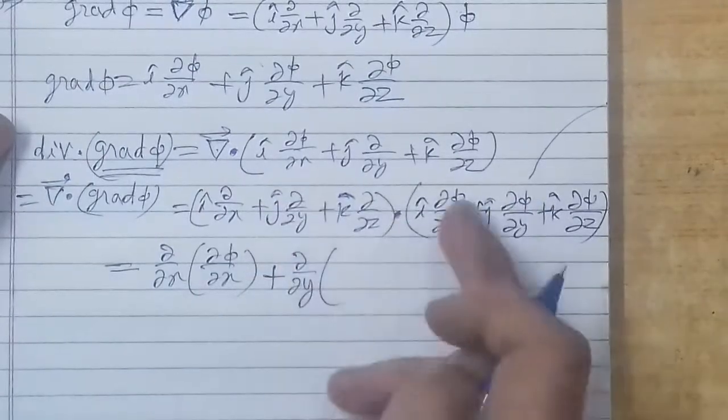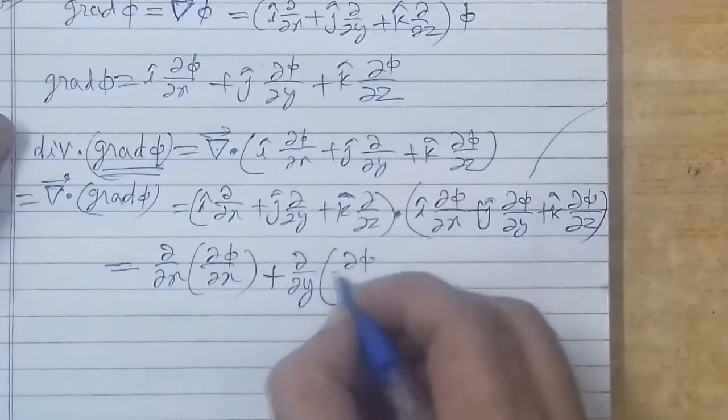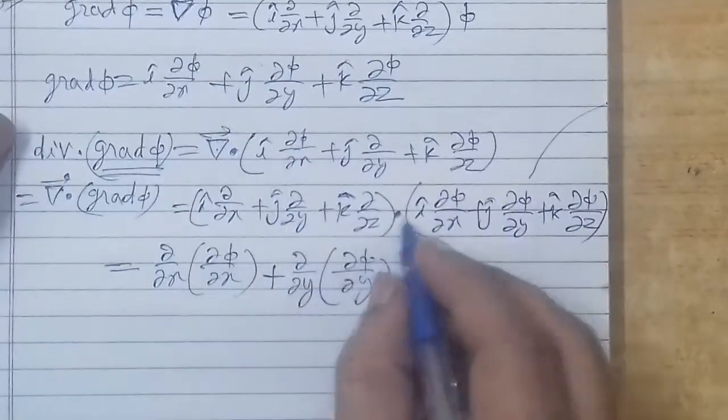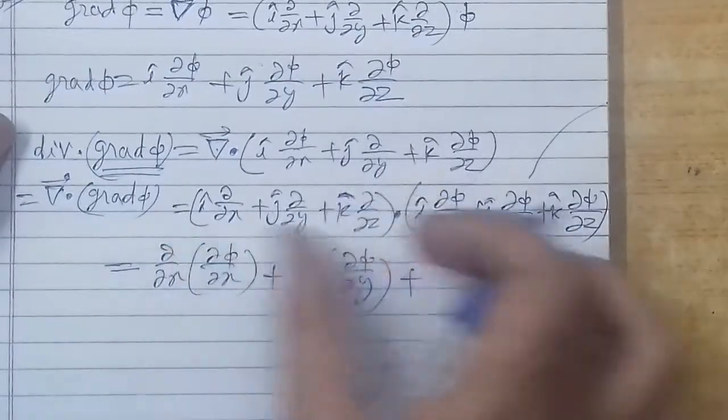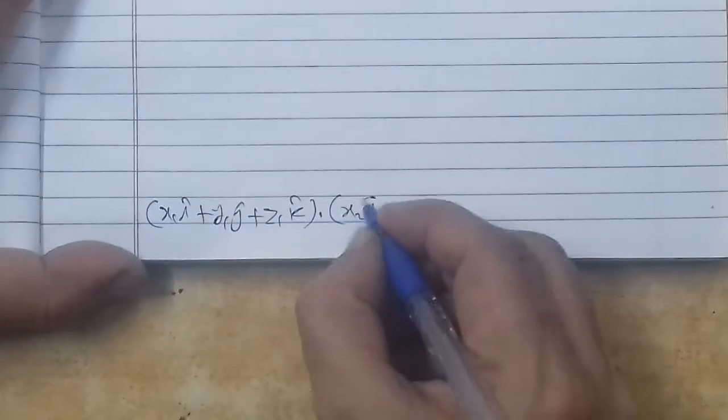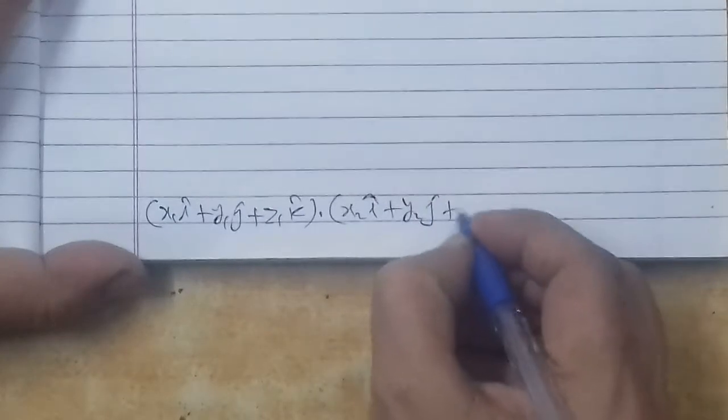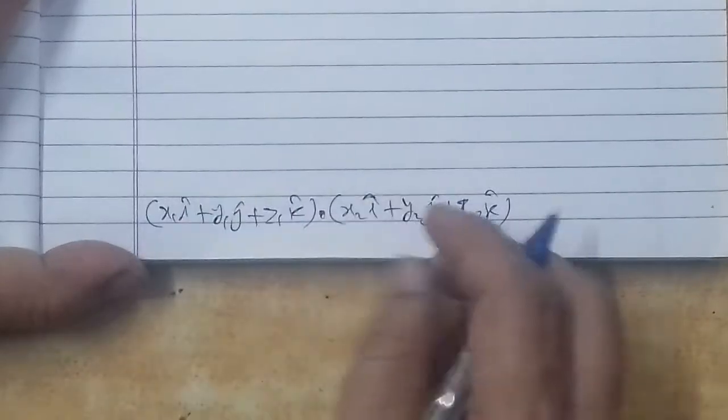When we do the dot product, then del over del x will multiply del phi over del x because i dot i is 1, j and k become 0. Then we are left with del over del x of del phi over del x. Similarly for other terms. The dot product of two vectors: if we have a vector x1 i plus y1 j plus z1 k cap and another vector x2 i plus y2 j plus z2 k cap, the dot product is a scalar quantity.